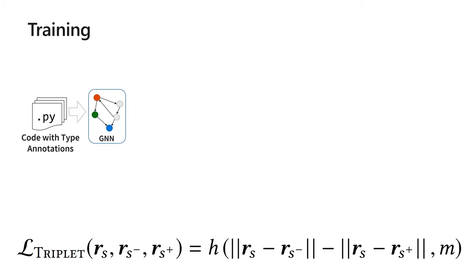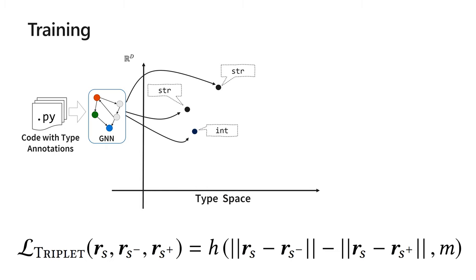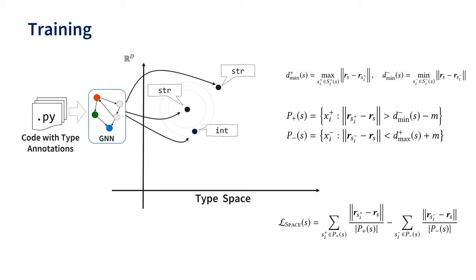So far, we assume that the graph neural network has been trained and that we have a consistent and useful type space. But how is this achieved? We use a variant of triplet loss. As the triplet loss equation suggests, given two symbols S and S_plus with the same type annotation, and the symbol with a different type annotation, S_minus, the training objective nudges the graph neural network to learn type embeddings such that symbols with the same type are close by and symbols with different type annotations are far away. It's as if each symbol attracts symbols with the same type annotation and repels type embeddings of symbols with different type annotations. In practice, we employ a variant of triplet loss that learns from more than three symbols at each time and considers larger sets of symbols. We call this the type space loss.